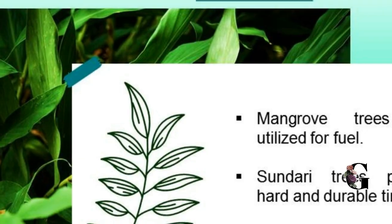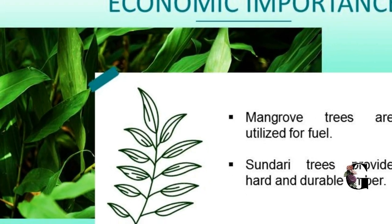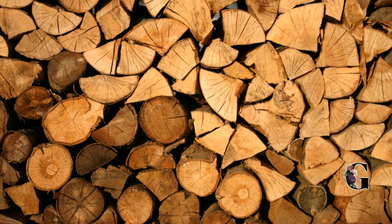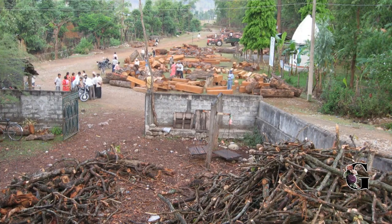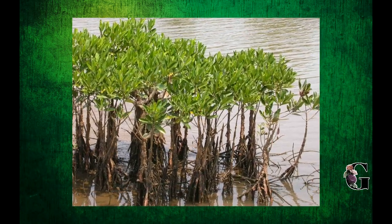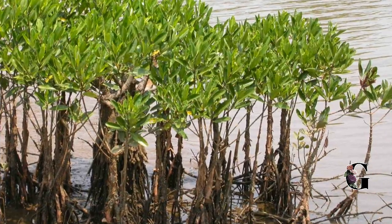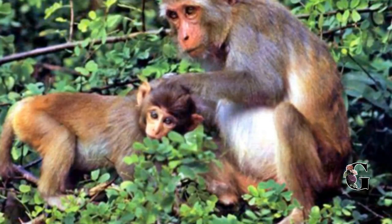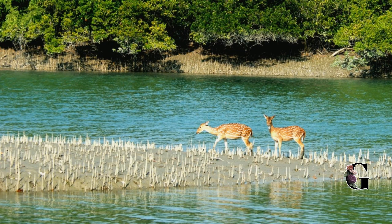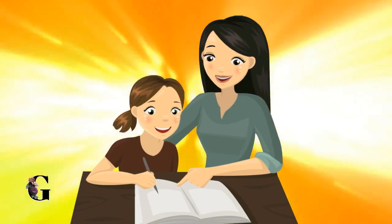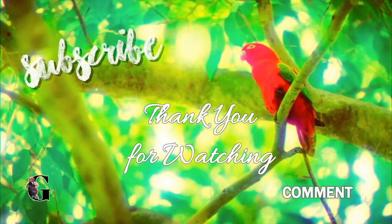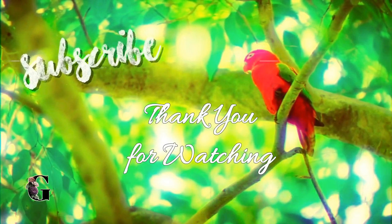The forest is home to a wide variety of trees such as sundari, palm, keura, rhizophora, and cane. The mangrove forest has high economic importance — the trees are utilized for fuel, and sundari trees are known for their hard and durable timber. The unique halophytes have been identified as a World Heritage Site by UNESCO since 1987. The Sundarbans have also been enlisted among the finalists in the New Seven Wonders of Nature.